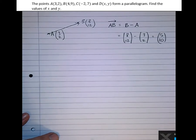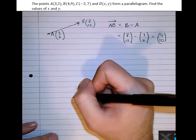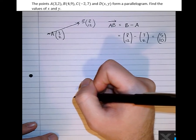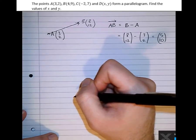Right, let's apply it to this question here. The points A(3, 2), B(4, 9), C(-2, 7) and D(x, y) form a parallelogram.